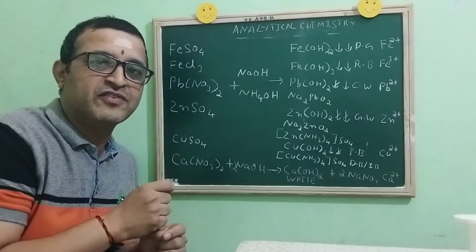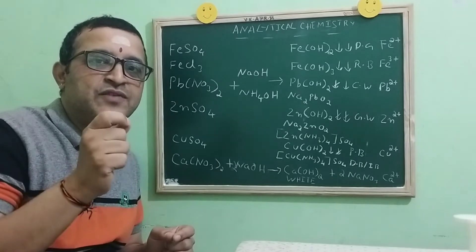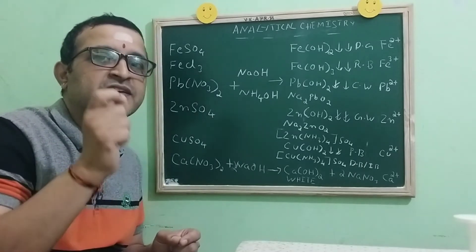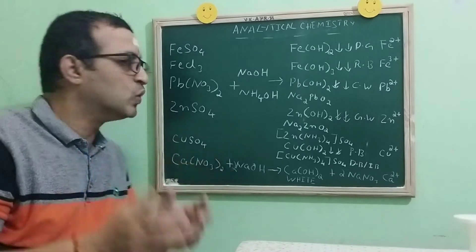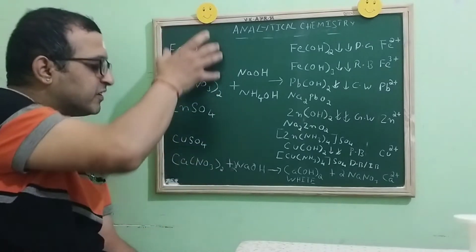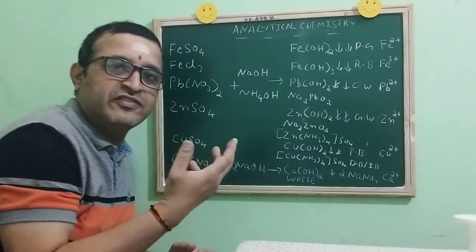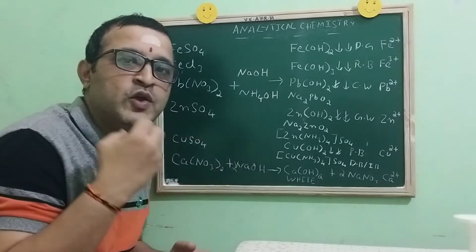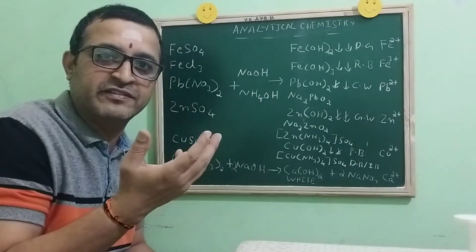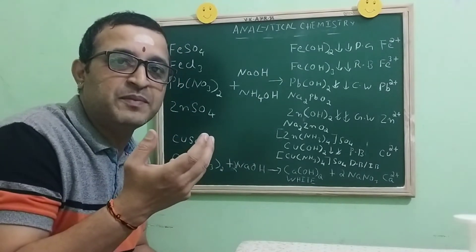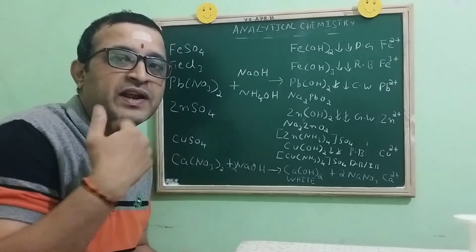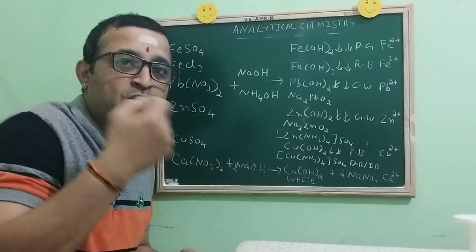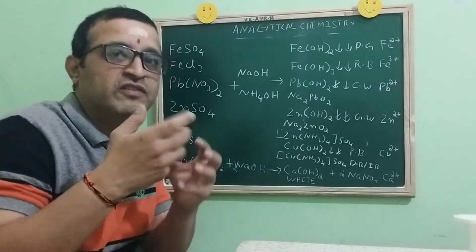In analytical chemistry, you have the identification of the cations present in a salt. For that, all these salt solutions, when treated with sodium hydroxide and ammonium hydroxide, you are going to get precipitates. Based on the color of the precipitate, we try to identify the cation — that is, the positive ion present in the salt solution.